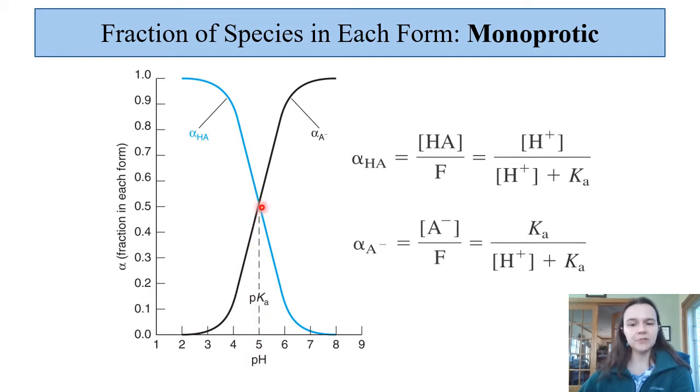That percentage decreases until you have a 50-50 split right at the pKa, which is 5 for this example, and meanwhile you have a rising fraction of A-, which after you've gone sufficiently basic, you have 100% of A-.